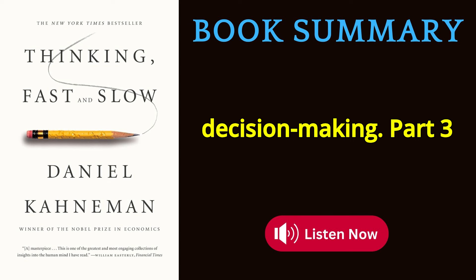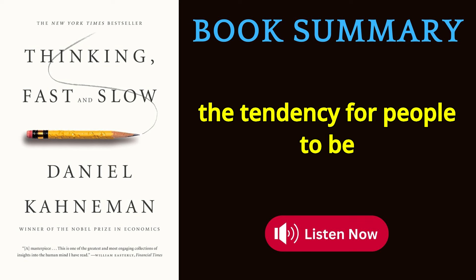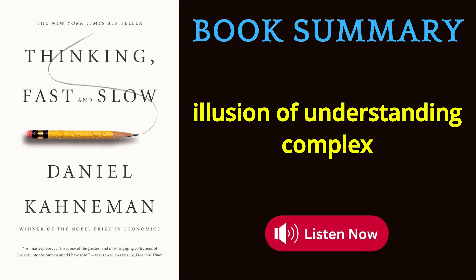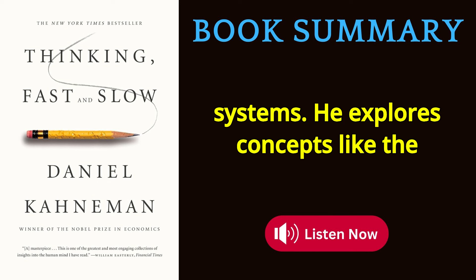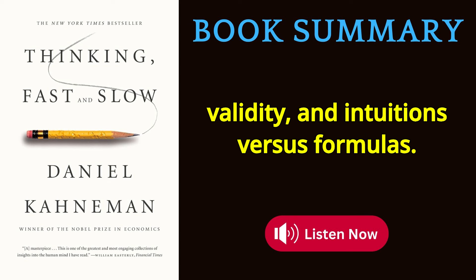Part 3: Overconfidence. Kahneman discusses the tendency for people to be overconfident in their judgments and the illusion of understanding complex systems. He explores concepts like the planning fallacy, the illusion of validity, and intuitions versus formulas.